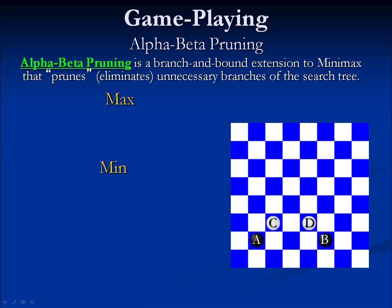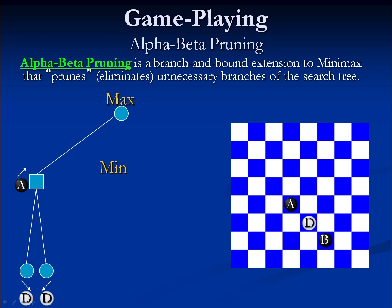In most ways, alpha-beta pruning acts just like regular minimax. Given this particular arrangement with the checkerboard that we've looked at before, max first has a decision to make. Our first option is that max can move A up and to the right. If max does so, that will leave min with a few options. In the first case, min moves D down and to the right, resulting in an evaluation of 0. On the other hand, min could move D down and to the left, resulting in an evaluation of 1. Between 0 and 1, min is going to select the branch that yields 0. So up to this point, the results have been the same as minimax.